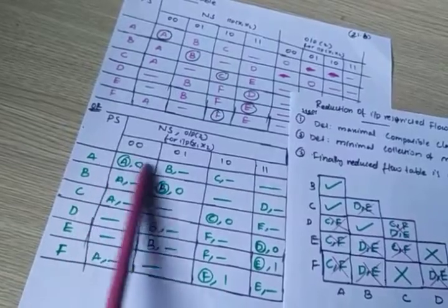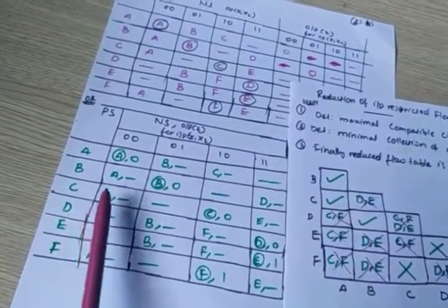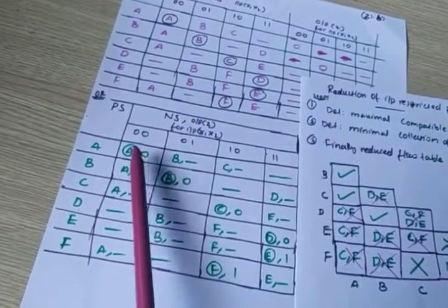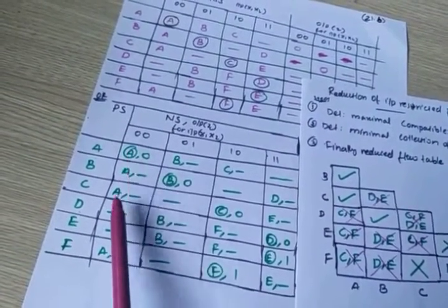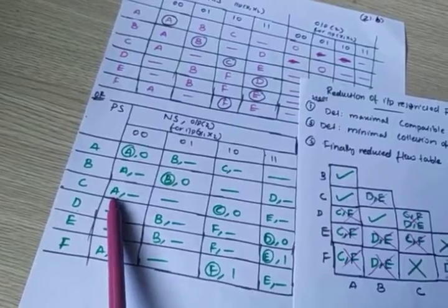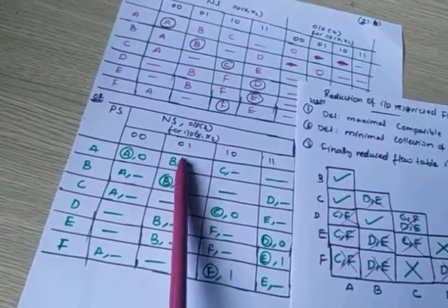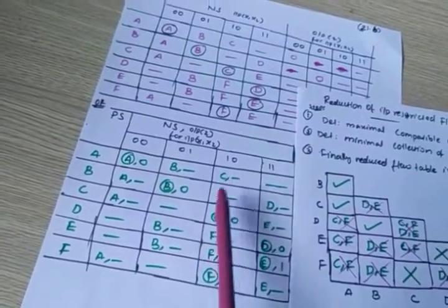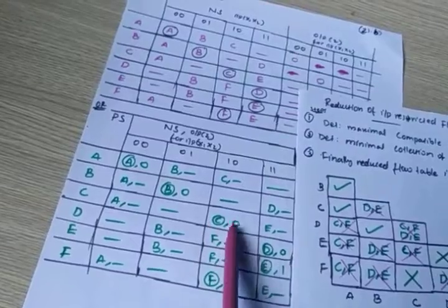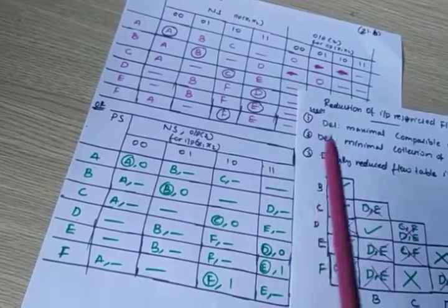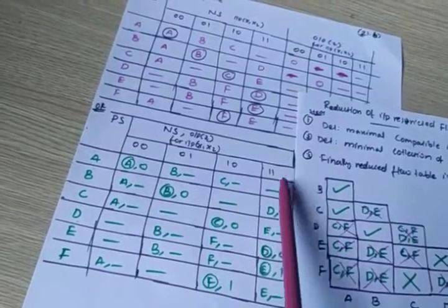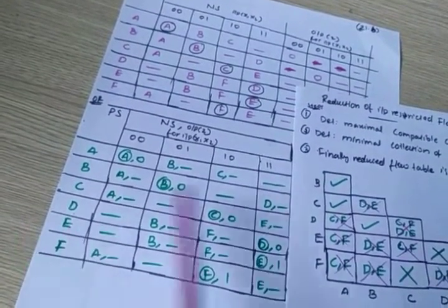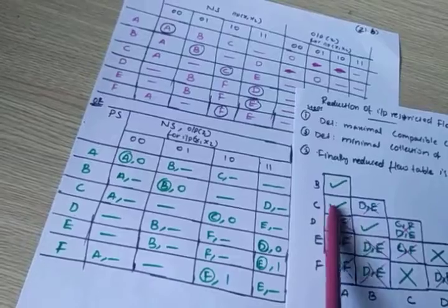Now consider A-C: check the A row and C row. First: A/A zero and don't care — matched. Next: B and don't care — matched. C/C zero and don't care — matched. E and don't care — matched. So A-C gets a tick sign.